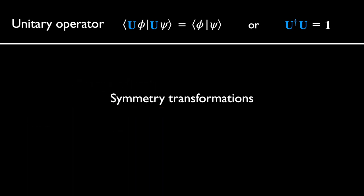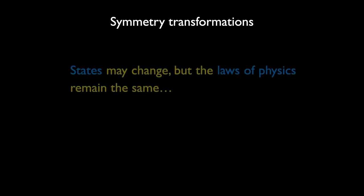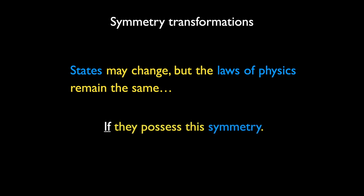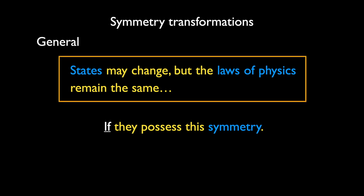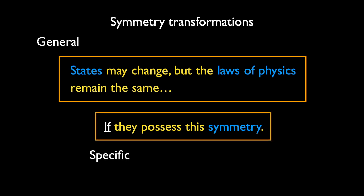Now we show how unitary operators can be used to represent symmetry transformations in quantum mechanics. First, let's define what we mean by a symmetry transformation. It is an operation that may change physical states but preserves the laws of physics if they possess this symmetry. The first part of this statement describes a general feature that must be satisfied by any symmetry, while the second part indicates the specific symmetries that some laws of physics or physical interactions may possess. Let's first look into the general features of symmetries.